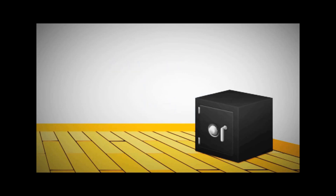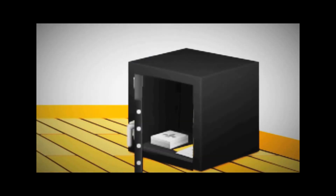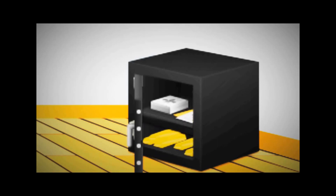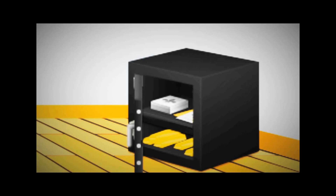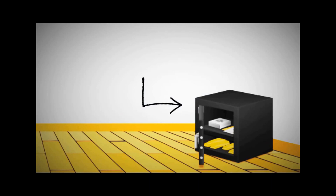But what if someone found a way to break into that? Then they'd have access to all your valuables — unless of course that safe had a hidden compartment that not even the thieves could guess was there. Replicating this scenario on a computer is where TrueCrypt comes into play. You can use TrueCrypt to make a strong encrypted password-protected folder, and also a hidden volume inside that folder so that only those that know it exists will know that it's there.